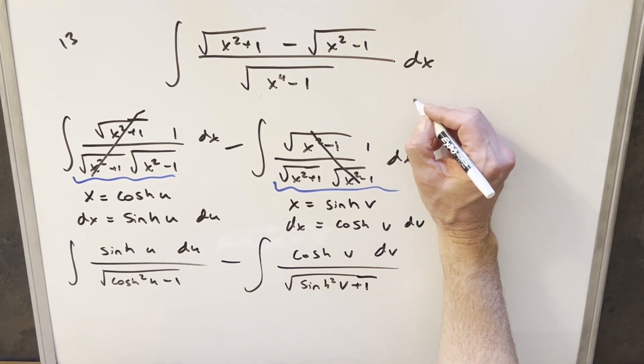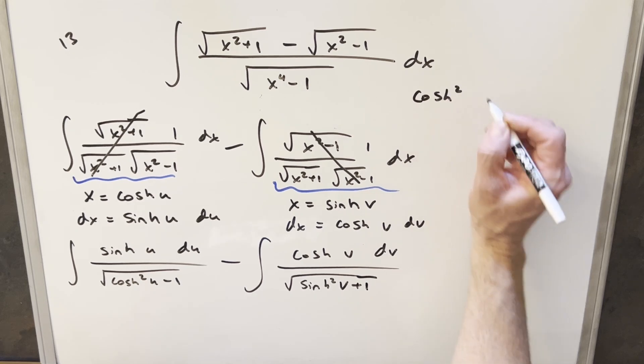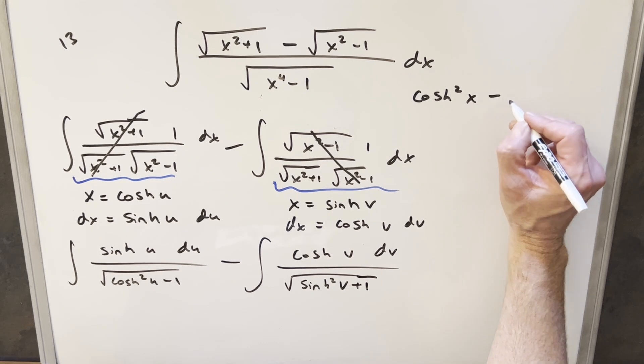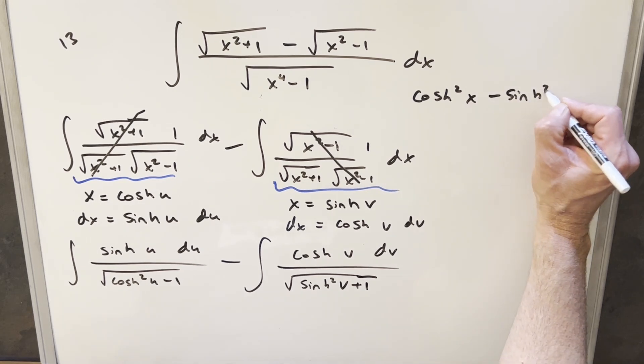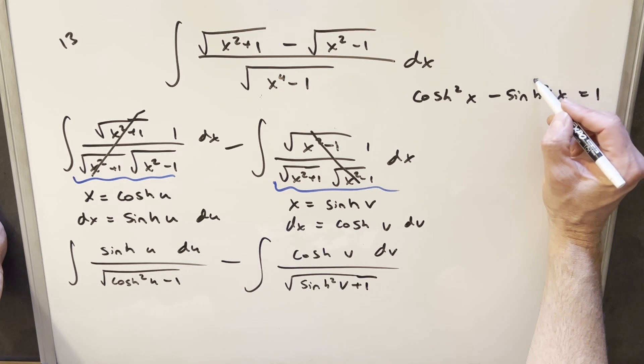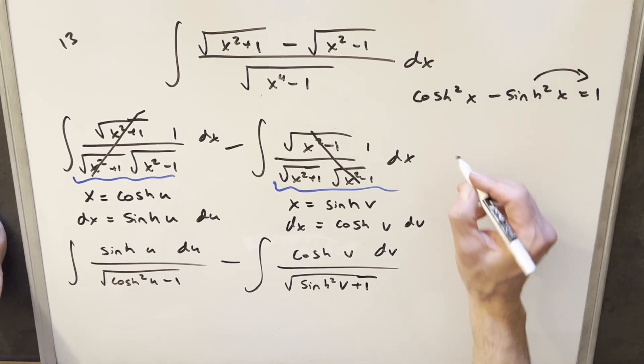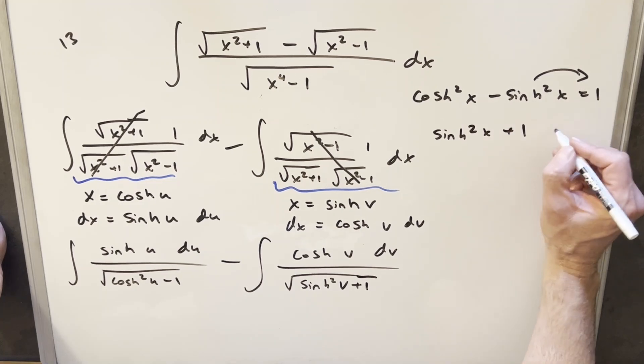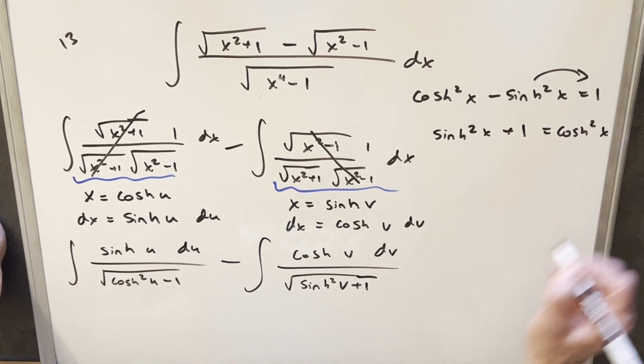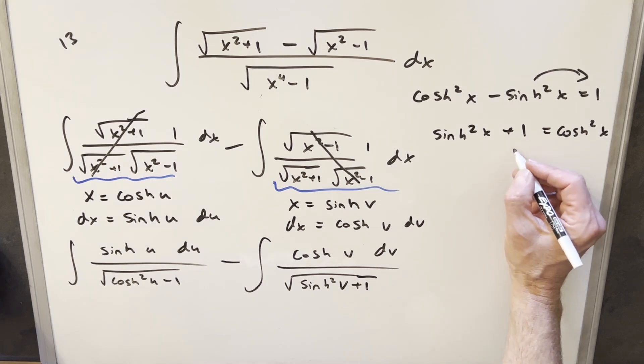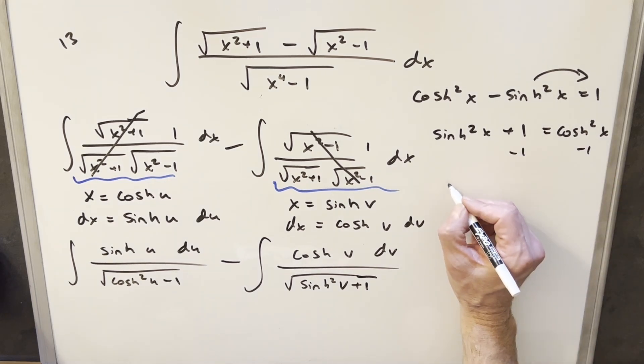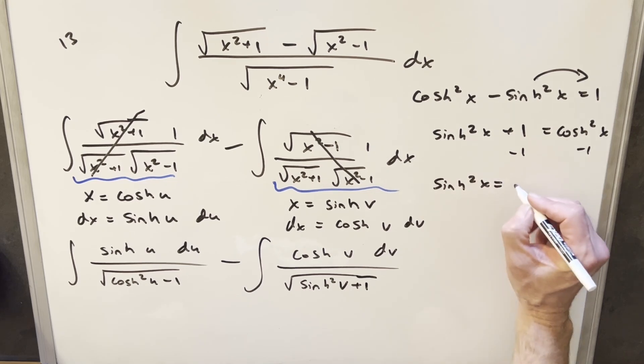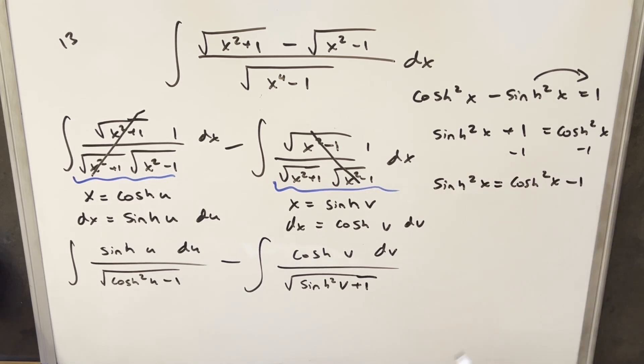Now to simplify this, we're going to use an identity that's really handy for hyperbolic trig functions, we're going to use cosh squared x minus sinh squared x equals one. Well then I can rearrange this by just adding sinh squared on both sides, we end up with sinh squared x plus one equals cosh squared x. And then from this one, I could just subtract the one on both sides here, and we see that we have an identity sinh squared x equals cosh squared x minus one.